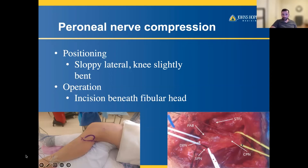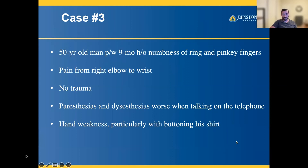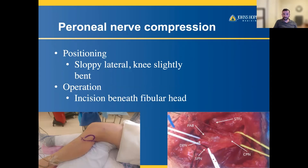In the right image, you can see the anatomy after dissection is performed: the common peroneal nerve on the right, looped in yellow. You can also see the branches, including the articular branch, the deep peroneal nerve, and the superficial peroneal nerve.